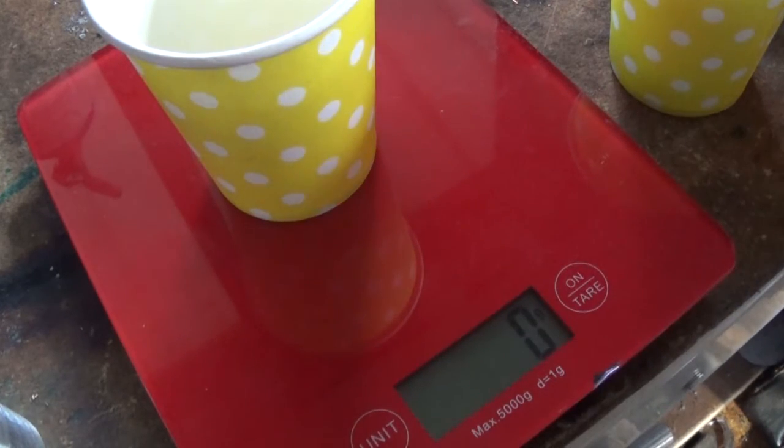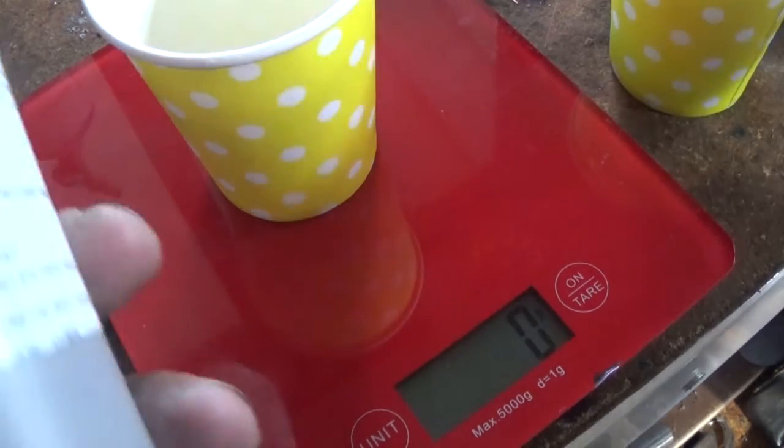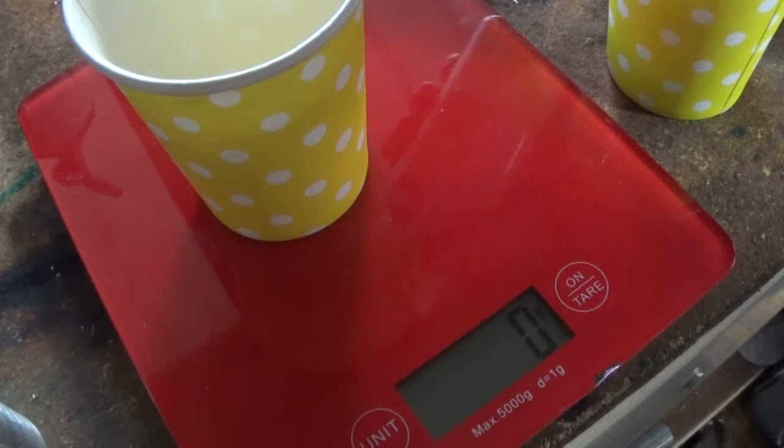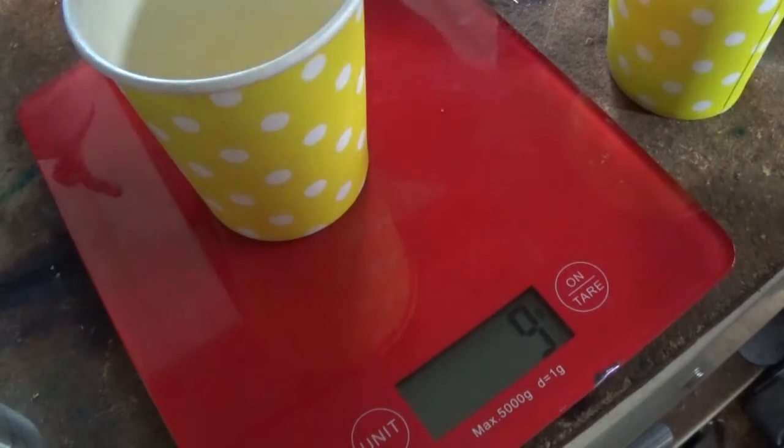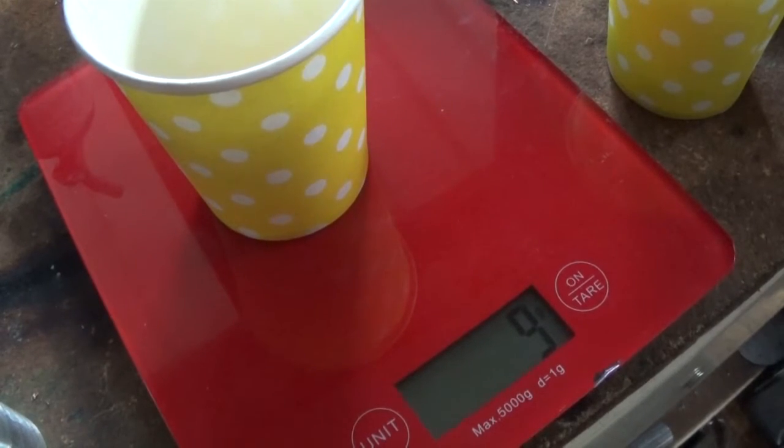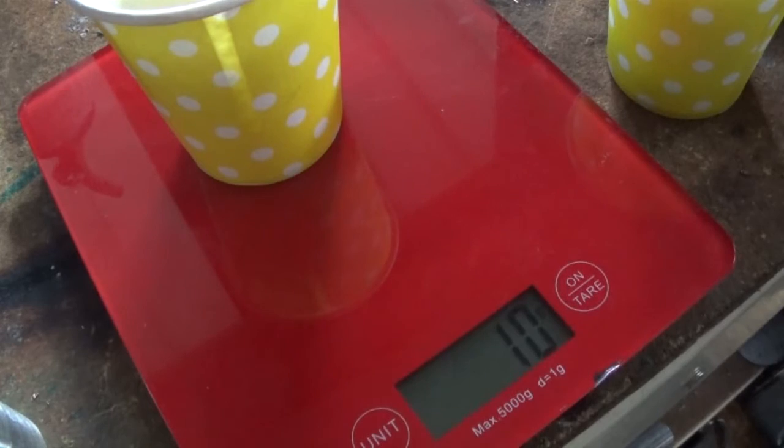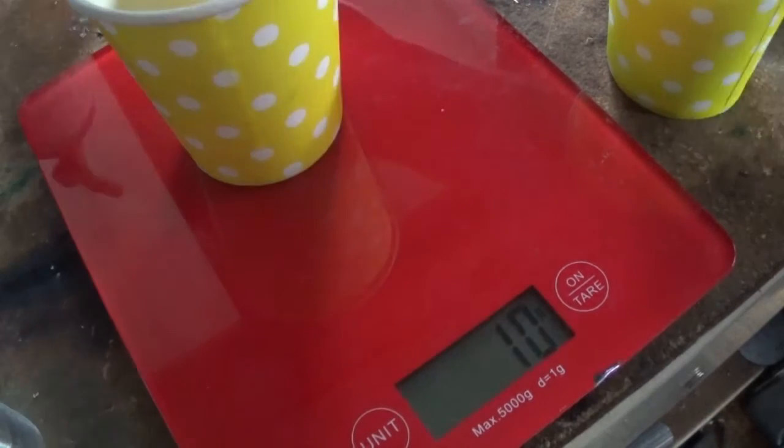This can be mixed by weight. Part B is 90 grams to 100 grams. We've got 9 grams of part A. Like that, that's only 8. That's 9. Sorry, we need 10 don't we. That's 10 grams of part A.